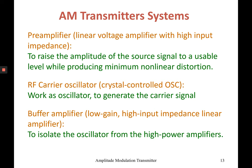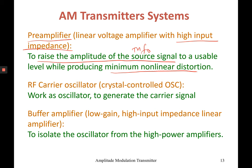There are a few components needed inside your transmitter. First is the pre-amplifier, which is mostly a linear voltage amplifier with high input impedance. We need this to raise the amplitude of the source or information signal to a usable level while producing minimum non-linear distortion.